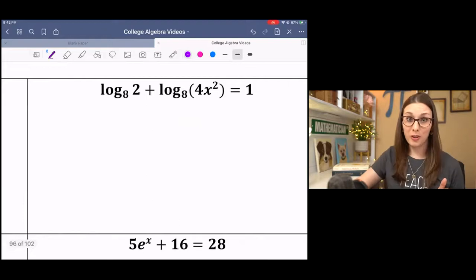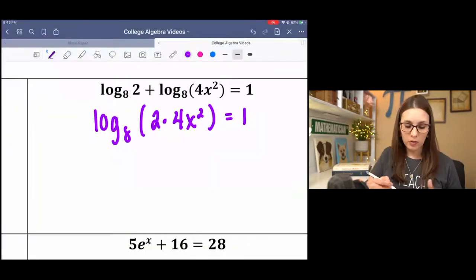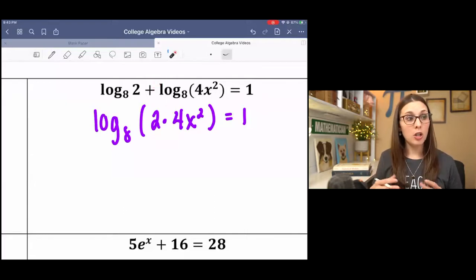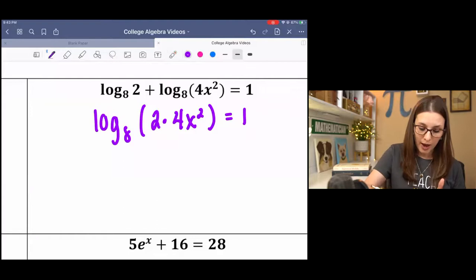Y'all try this one on your own, and then come back. What you end up having on this one is addition is going to translate to multiplication. So we have logs with the same base. We can consolidate them with multiplication. Then we have, we don't have a log on the right side.